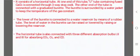It consists of a horizontal tube. At one end of this tube, fused CaCl2 is connected through a three-way stopcock. The other end of the tube is connected with a graduated burette. The burette is surrounded by a water jacket to keep the temperature of the gas constant.